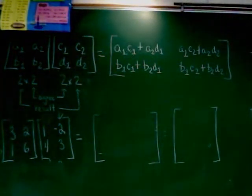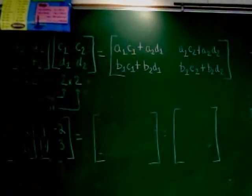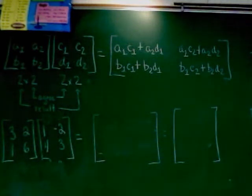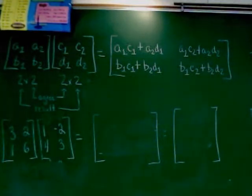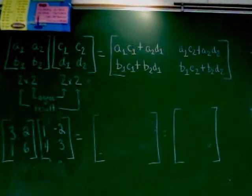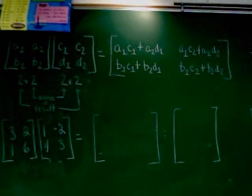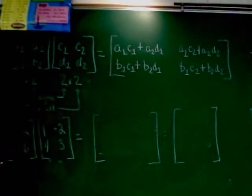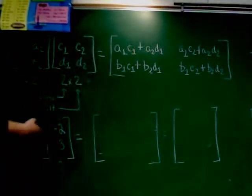Alright, which is what you got down there. Three, two, one, six, times one, negative two, four, three. The first thing we have to do is list the dimensions. You know how to do that part. We did that yesterday. Remember, the dimensions are the number of rows it has, and the rows go across, times the number of columns it has. Those are the ones that go up and down. So, this matrix has two rows and two columns, and obviously this one does too.